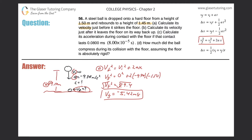Now let's take a look at letter B: calculate its velocity just after it leaves the floor on its way back up. Let's draw a new diagram. After it hits the floor, the ball is going to bounce back up. We want to find the initial velocity here — that's what it's asking us to calculate. We know it's going to reach an ultimate height of 1.45 meters, as stated in the problem.